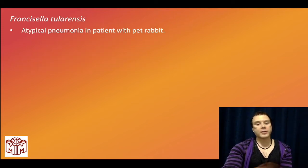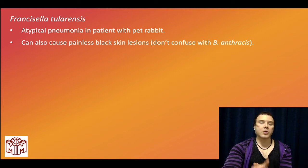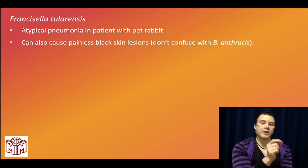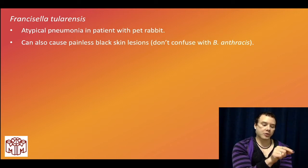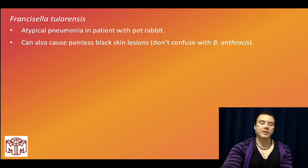Francisella tularensis: you just need to know this is an atypical pneumonia that can occur due to rabbits. It can also cause painless black skin lesions. Don't confuse this with the black eschar with surrounding edema that you get due to cutaneous anthrax.